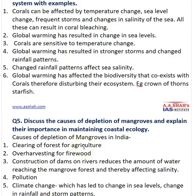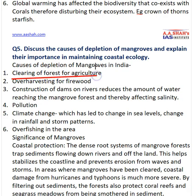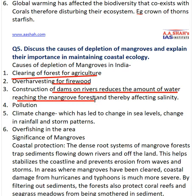The next question was question number 5: discuss the causes of depletion of mangroves and explain their importance in maintaining coastal ecology. The causes of mangrove depletion include: clearing the forest for agriculture, over-harvesting for firewood, and construction of dams on rivers that reduces the amount of freshwater reaching the mangrove forest. Mangroves thrive in a very narrow range of salinity in a brackish environment formed when river freshwater mixes with seawater. When this freshwater is reduced, it affects the salinity.